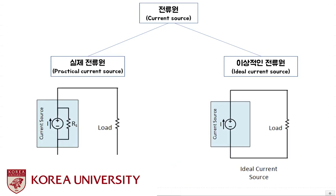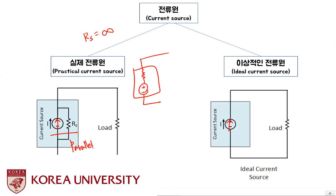Next is the ideal current source. Why is the internal resistance of an ideal current source equal to infinity? An ideal source literally wants to deliver all of its energy. However, an ideal current source is different from an ideal voltage source: an ideal current source has its internal resistance in parallel, whereas an ideal voltage source has its internal resistance in series.